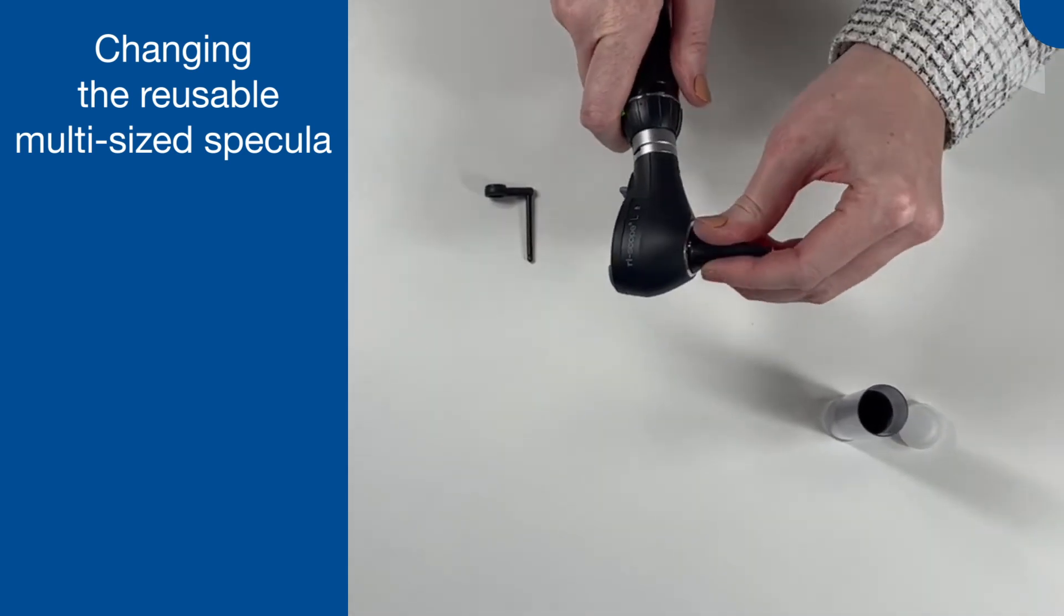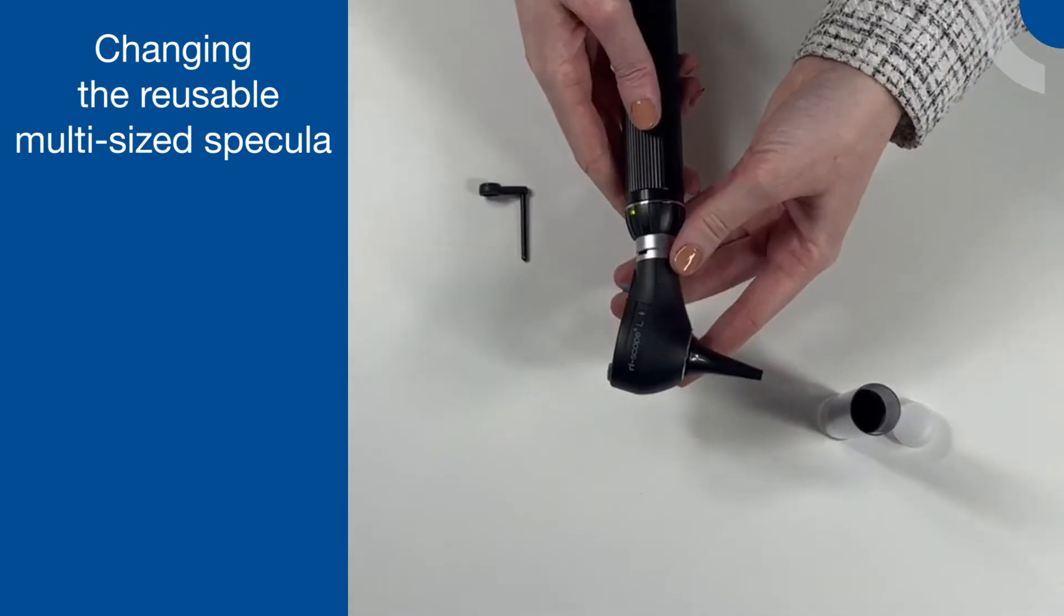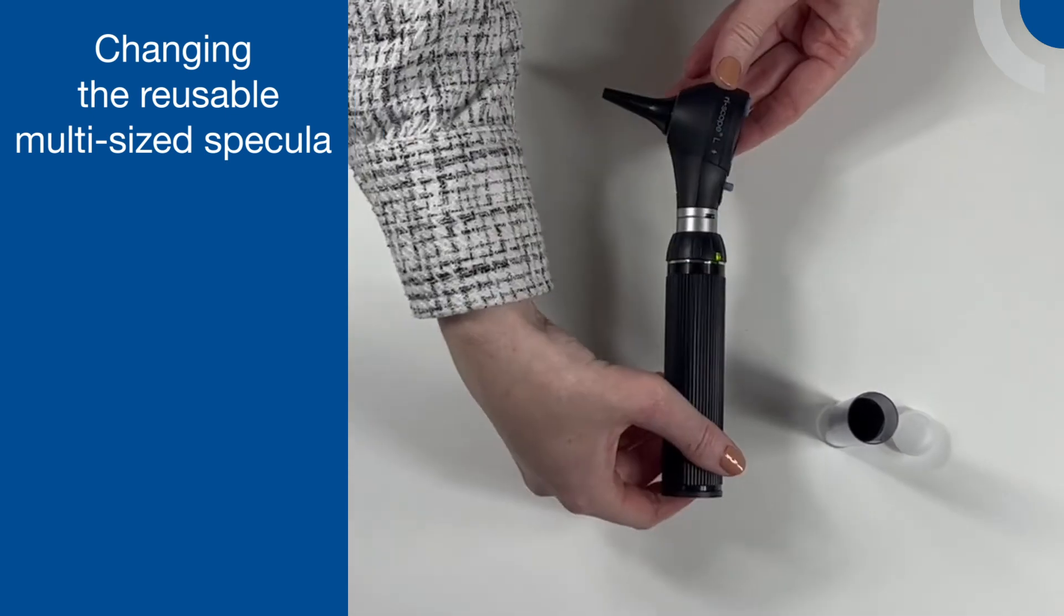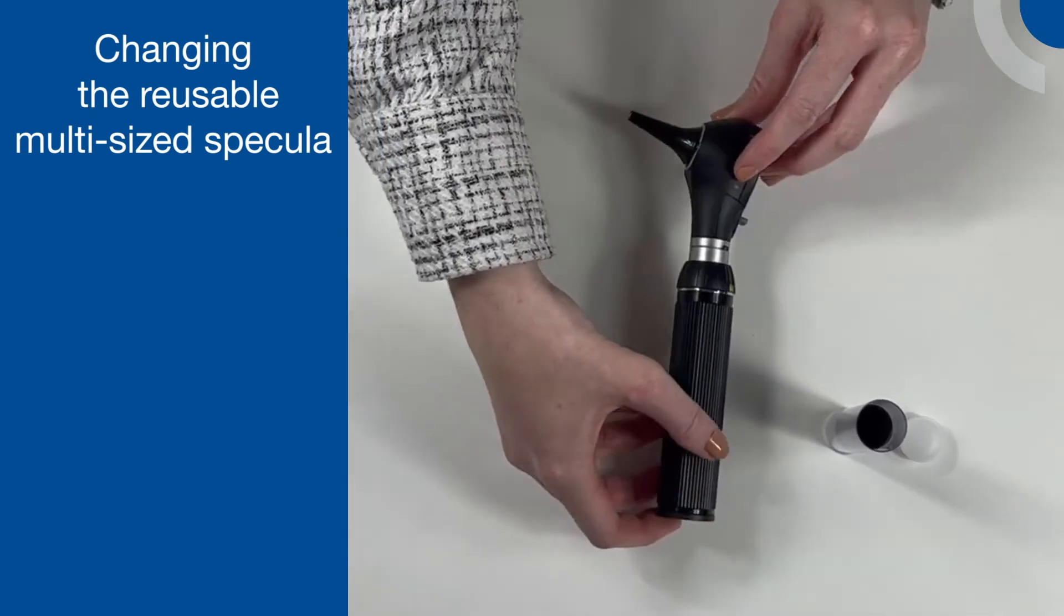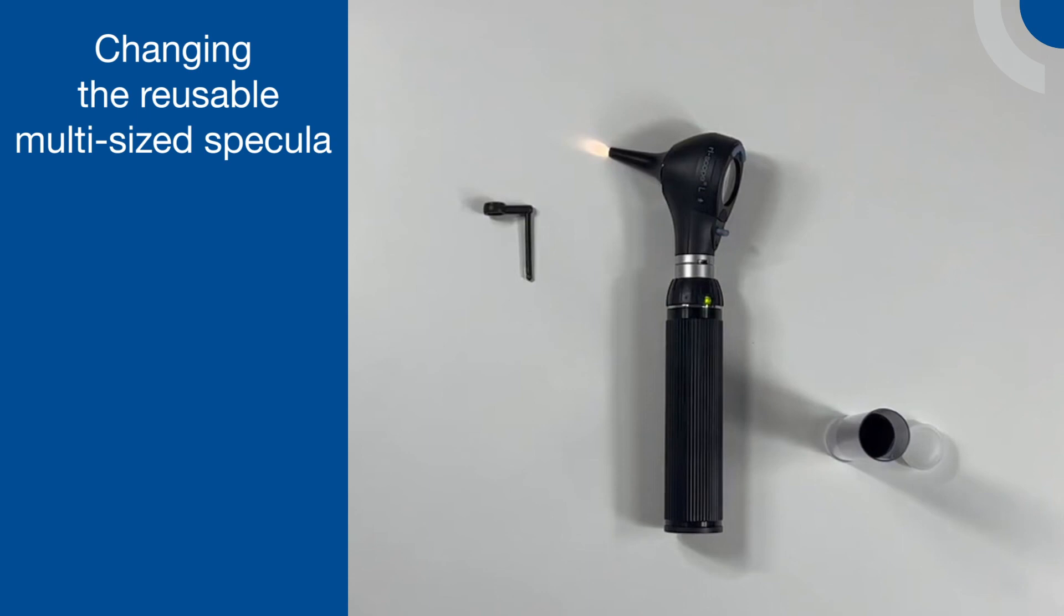To attach a specular to the otoscope, firmly press the specular onto the specular fitting. It is the silver ring integrated into the face of the otoscope and you can twist slightly to ensure it is engaged.